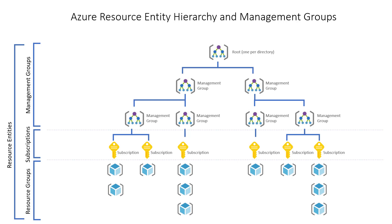Azure resources and resource entities such as management groups are not impacted by changes in how you purchase Azure. The limitation of management groups is that they cannot span Azure AD directories, so you should define one root management group per AD directory. You can build a flexible structure of management groups and subscriptions to organize your resources into a hierarchy. The primary role of management groups is for unified policy and access management. Permissions, policies, and resources can be assigned at a management group level and cascade down to child management groups, subscriptions, resource groups, and resources.